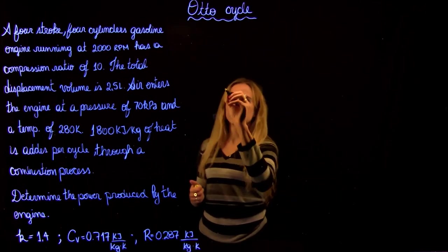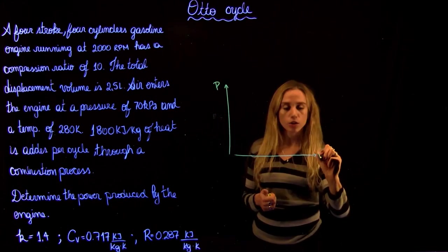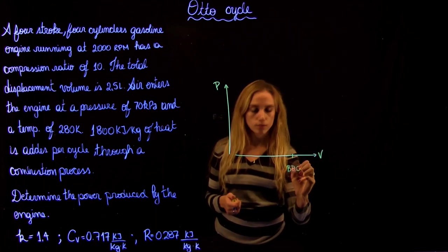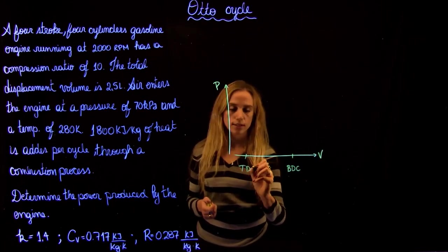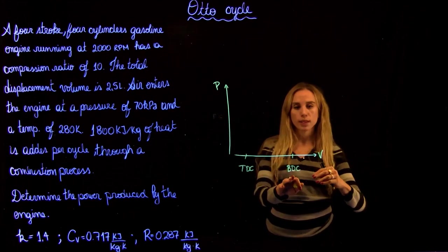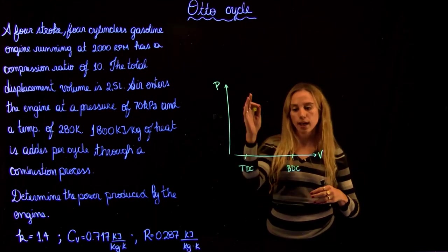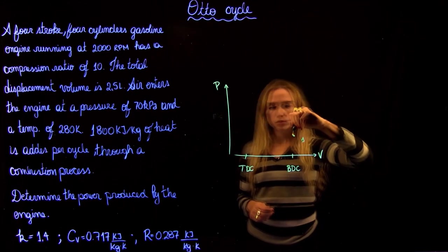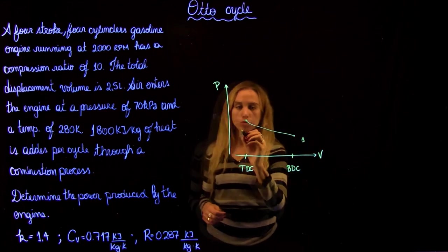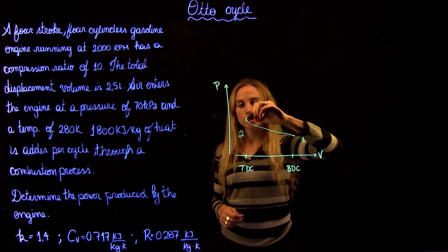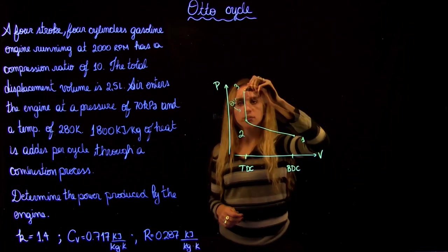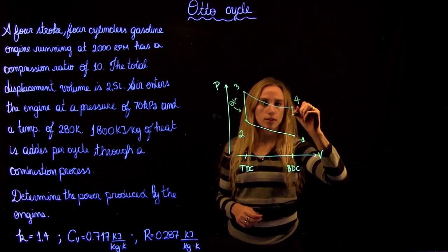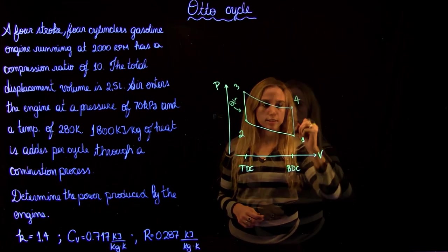In our PV diagram, we have pressure on the vertical axis and volume on the horizontal axis. Thinking in terms of piston movement, we have the bottom dead center and top dead center. Starting at point 1, we go through an isentropic compression — increasing in pressure, decreasing in volume — to point 2. Then we have heat addition, Q in, from 2 to 3. Then isentropic expansion to point 4, and finally the fluid exhausts the system, with Q out.